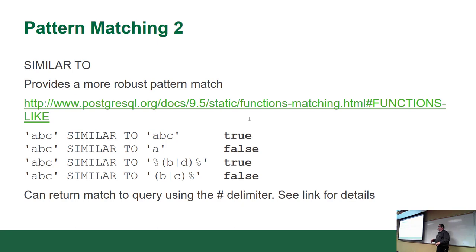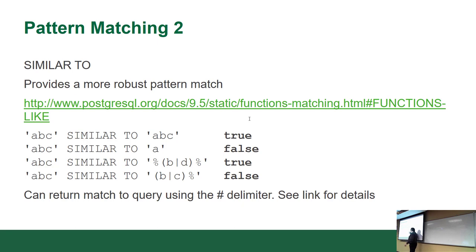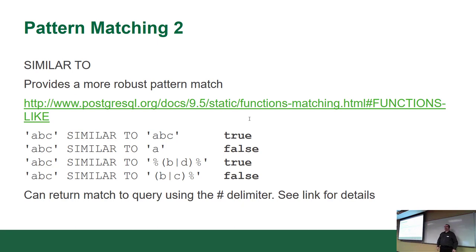I don't spend much time on SIMILAR TO because not all database servers offer it — MySQL doesn't have it, and Microsoft SQL Server has something similar but not identical. It allows significantly more robust pattern matching, for example finding anything containing B or D. How many times have I used SIMILAR TO in my career? Zero. Ninety-nine percent of my pattern matching has worked fine with LIKE.